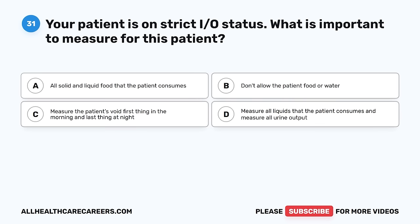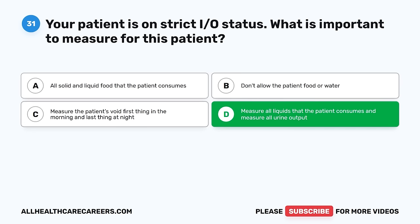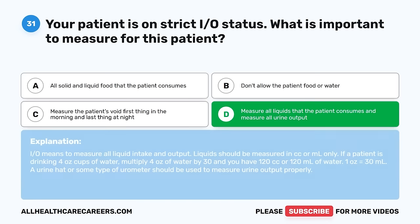Question 31. Your patient is on strict I&O status. What is important to measure for this patient? A. All solid and liquid food the patient consumes. B. Don't allow the patient food or water. C. Measure the patient's void first thing in the morning and last thing at night. D. Measure all liquids that the patient consumes and measure all urine output. The correct answer is D. I&O means to measure all liquid intake and output in cc or milliliters only. If a patient is drinking 4 oz cups of water, multiply 4 oz times 30 to get 120 cc. A urine hat or urometer should be used to measure urine output properly.